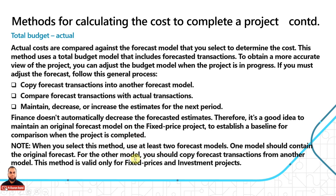Under the total budget actual method, at least two forecast models should be used — one to keep the original forecast and another into which forecast transactions are copied. This method is valid only for fixed price and investment projects.